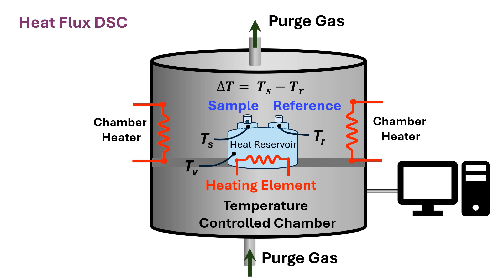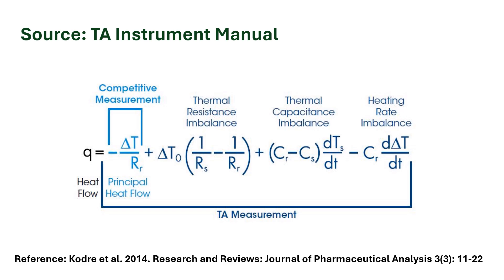Therefore, in the heat flux system we measure sample temperature, reference temperature, and reservoir temperature. In both systems — power compensated DSC and heat flux DSC — all operations are controlled and recorded by a computer with a data interface with the instrument. I have just shown the relationship between heat flux and delta T; I am not explaining the details of the equation here, but you can find it in any textbook on DSC.